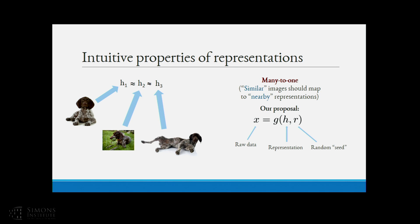Our proposal for how to model this is as follows. In order to generate the possible raw data manifestations of some particular representation, there is a probabilistic process which involves a deterministic function G that takes the representation as one argument and some extra random seeds. The X we get this way is some kind of distribution over possible raw data manifestations of some representation H.